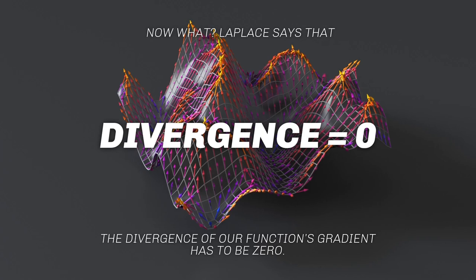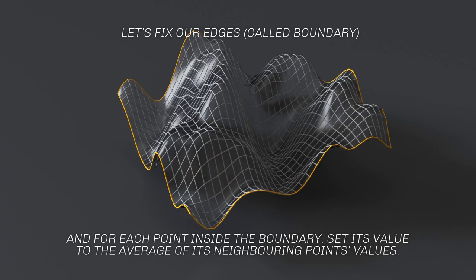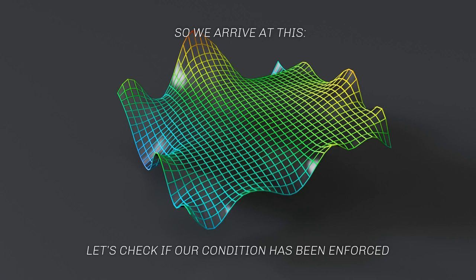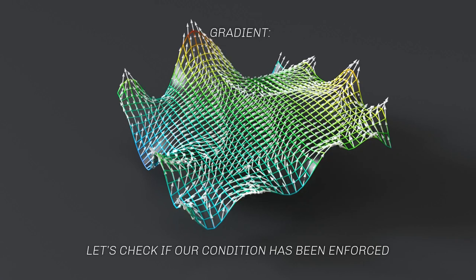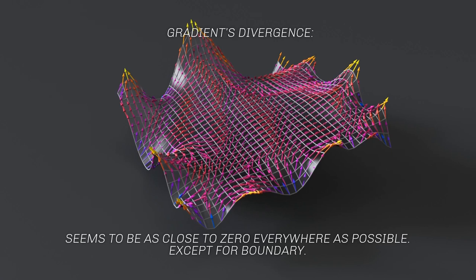Laplace's equation specifies that inside our boundaries, the divergence should be zero — meaning the gradient should not point to or away from any given point, and our function within the boundary should have no peaks or valleys. To calculate this, we fix the edges as boundaries and for each interior point, set its value to the average of its neighbors' values — repeating this for a few hundred to a few thousand iterations. We arrive at something resembling a rubber sheet or soap film, with the divergence of the gradient successfully minimized.